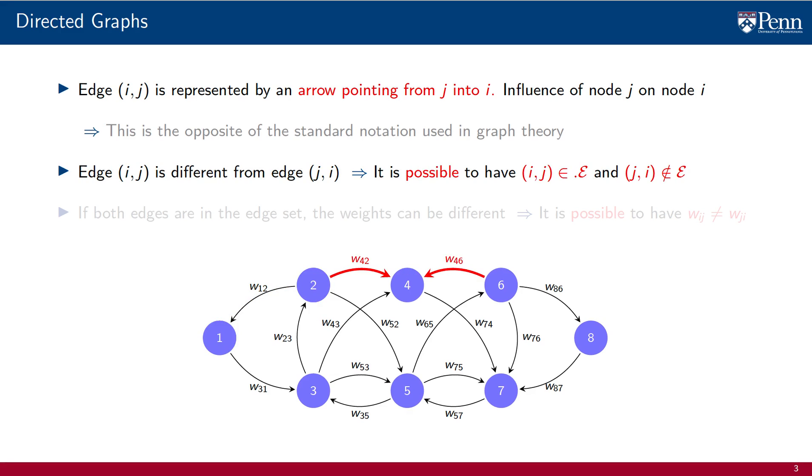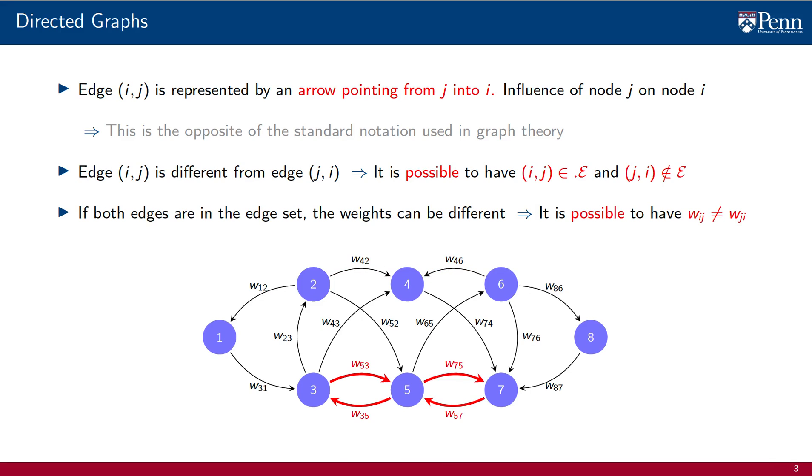Graphs are classified as directed or symmetric, depending on the symmetry of the edge and weight sets. In a directed graph, the edge (i, j) is different from the edge (j, i). It is possible to have (i, j) be part of the edge set, whereas (j, i) is not part of the edge set. For instance, in the figure below, there are arrows pointing from node 2 into 4 and from node 6 into 4, but there are no arrows pointing from 4 into either 2 or 6. If both edges are part of the edge set, it is still possible to have a difference in the weights.